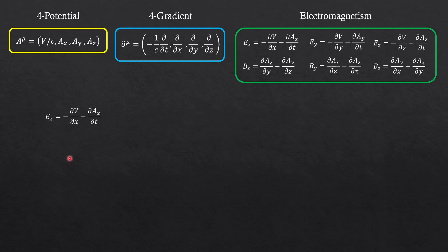The first expression. V is the first element of the four potential, right? But we are missing C here. Because the first element should be V over C. So we gotta multiply this by C in order to replace V with A0. And Ax is the A1, right? Then d over dx is the d1, the second element of the four gradient. And minus d over dt is the first element. But in here again, we have 1 over C here, but not here. So if we want to replace negative d over dt, we'll have to replace it with C d0. Does it make sense? I just replaced them with four potential and four gradient. That's it. We do the same thing for the other ones. You can check that out by yourself.